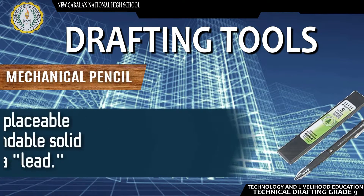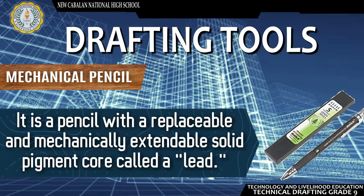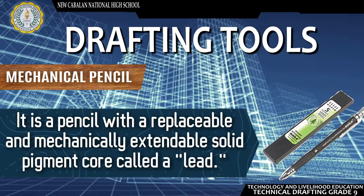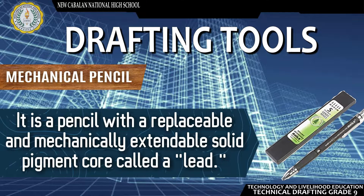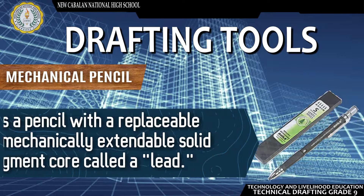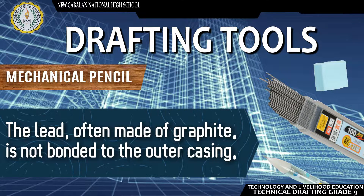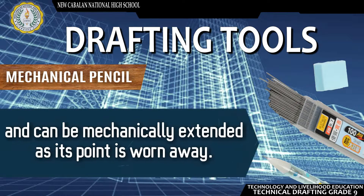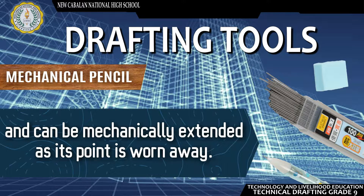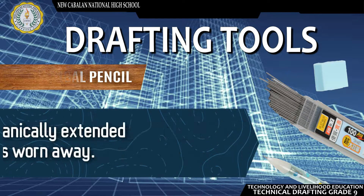Mechanical Pencil — It is a pencil with a replaceable and mechanically extendable solid pigment core called a lead. The lead, often made of graphite, is not bonded to the outer casing and can be mechanically extended as its point is worn away.